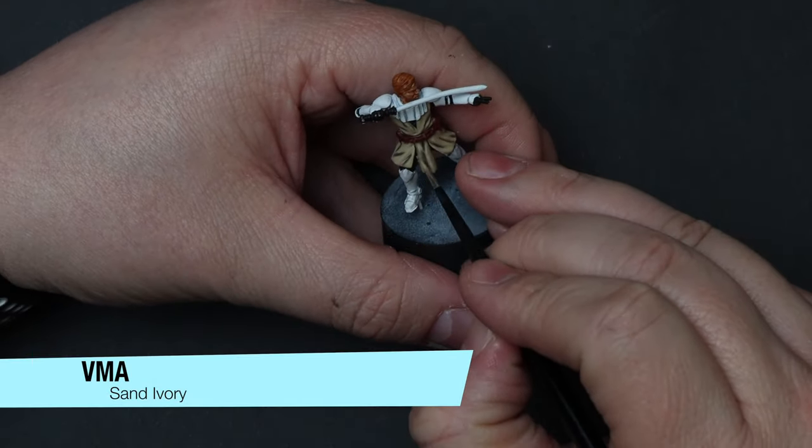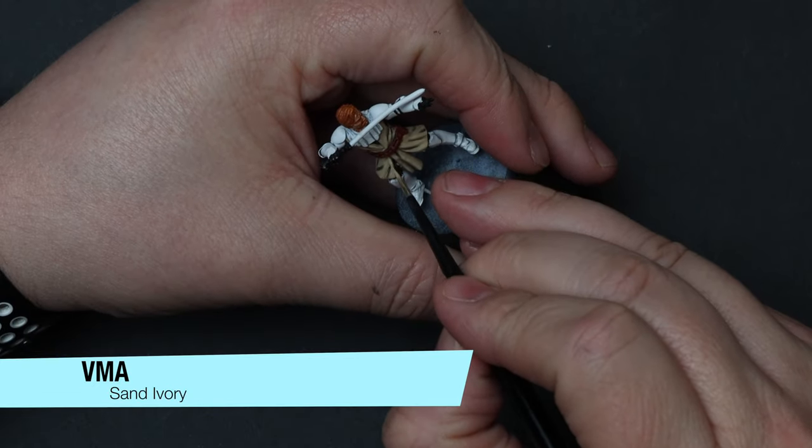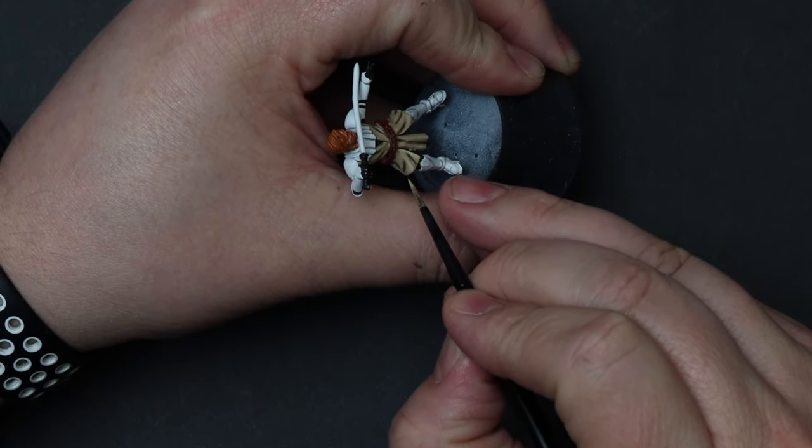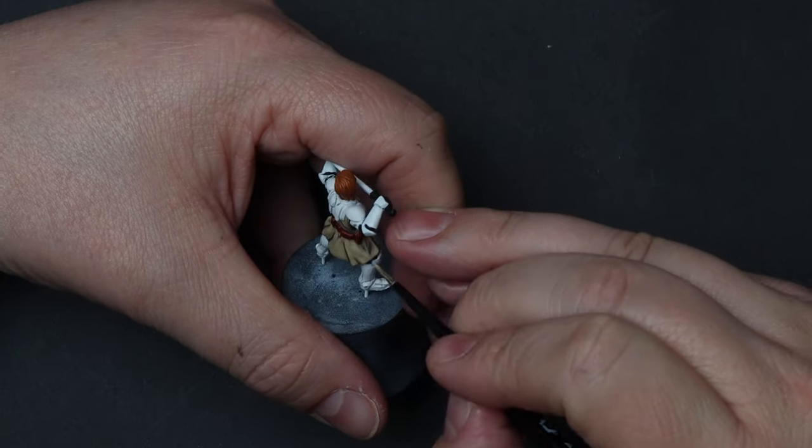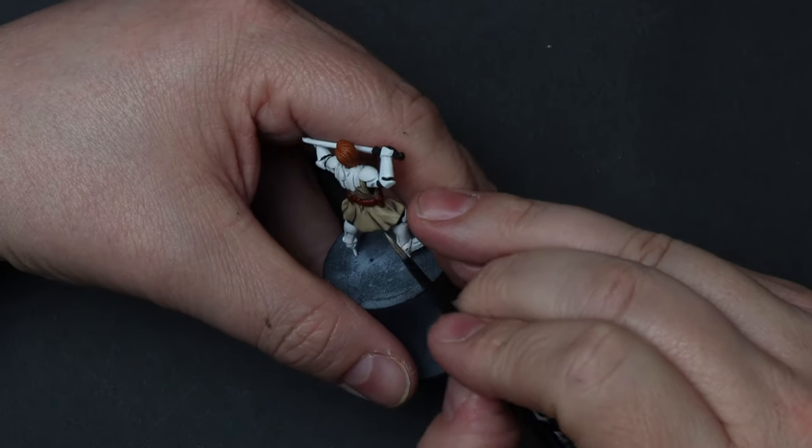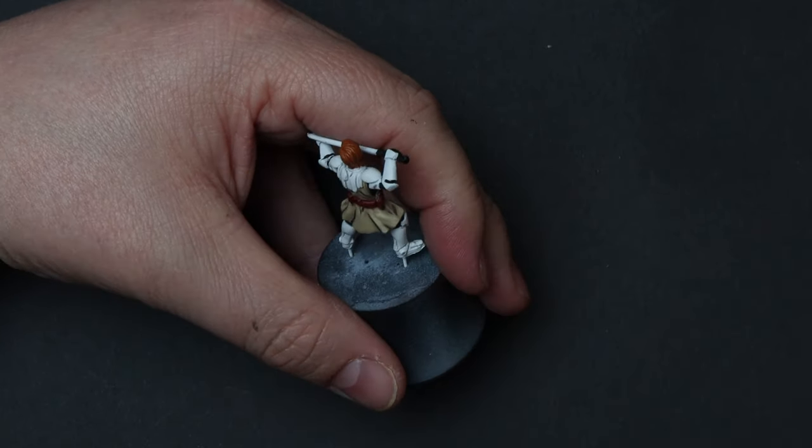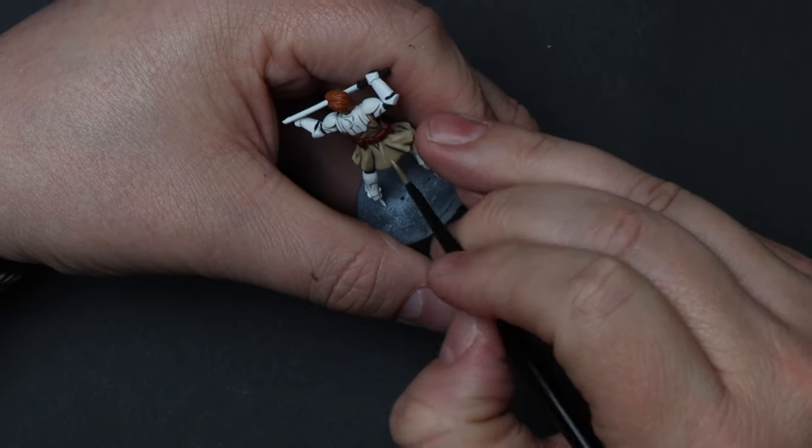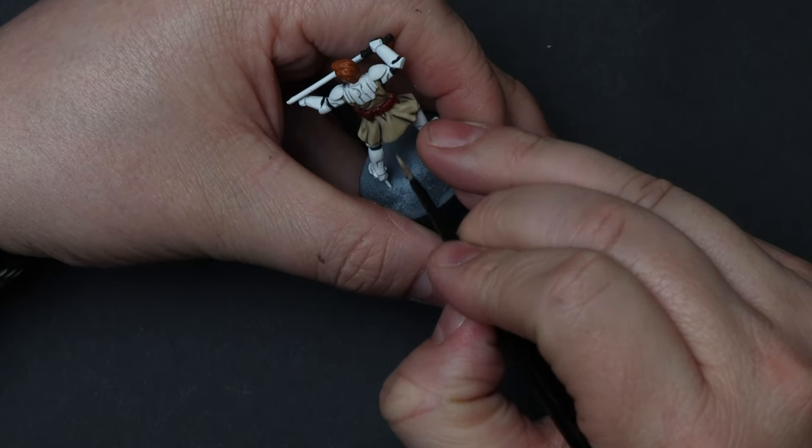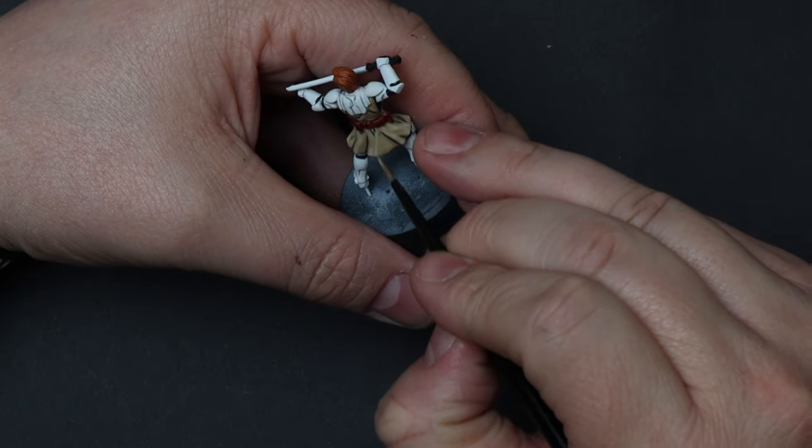And if you're feeling a little spunky, you can go ahead and push those highlights just a little bit further. And for that, we'll use some of the model air sand ivory, which is a pretty close approximation to the buff itself. So when done in moderation, it won't be an overly extreme highlight.